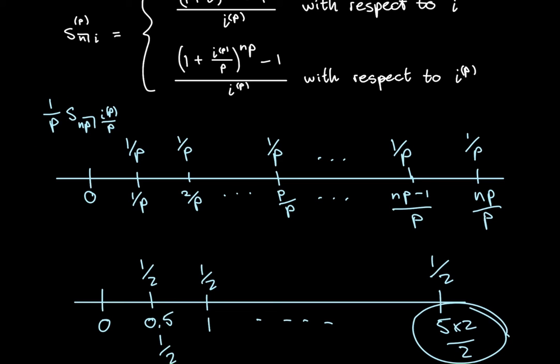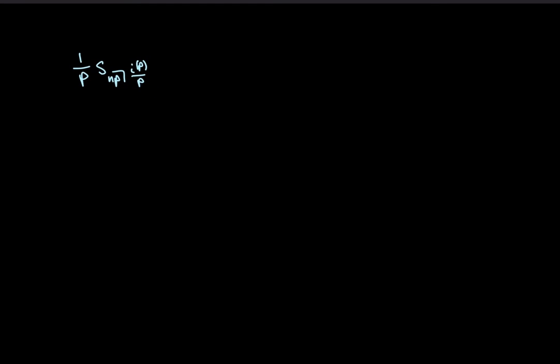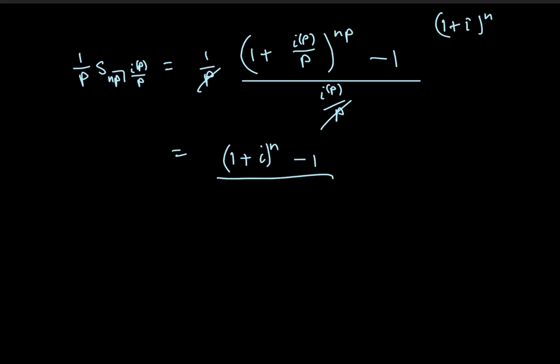So let's use this and write out the formula for it and see how we can come back to arrive at that formula. Okay, so here's this formula. And we know that this would then be equal to 1 over p times by 1 plus i^(p) over p to the power of np minus 1 all over i^(p) over p. So now what we could then do is we could cancel those p's. And then we could substitute in 1 plus i to the power of np for 1 plus i^(p) over p to the power of np. And if we do that, then we get 1 plus i to the power of np minus 1 over i^(p), which is then equal to s_n|i^(p).